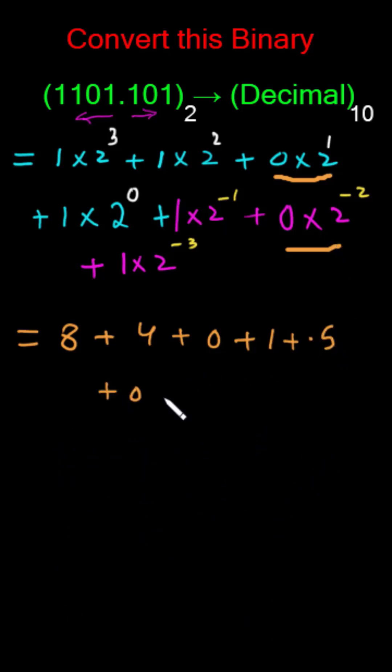This one will give us 0.5, this one will give us 0, and then this one will give us 1 over 8. So by calculating I will get an answer of 13.625. So this binary number has a decimal equivalent of 13.625.